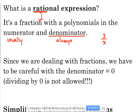That's considered a rational expression. If that was flipped over — x over 3 — yes, that is a fraction, and yes, it has a polynomial in the numerator, but really that's just one-third x. This is linear, okay? This is a linear expression. This is a rational expression. Just a little technical difference there.